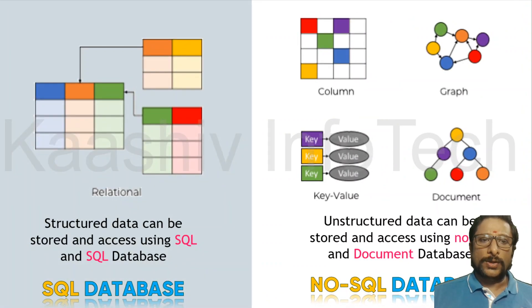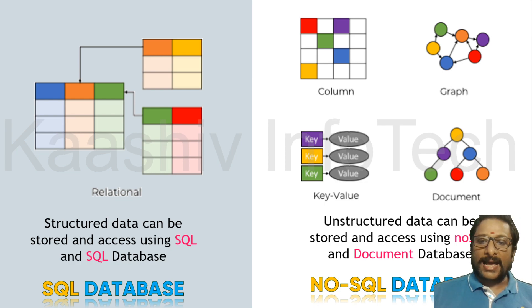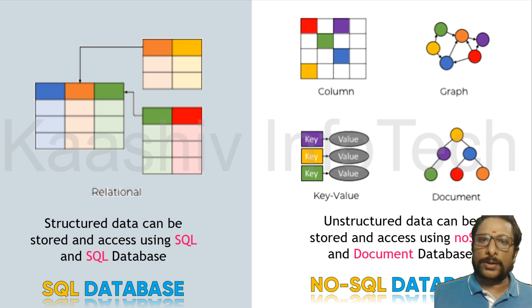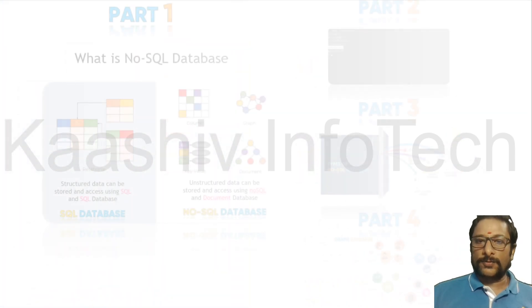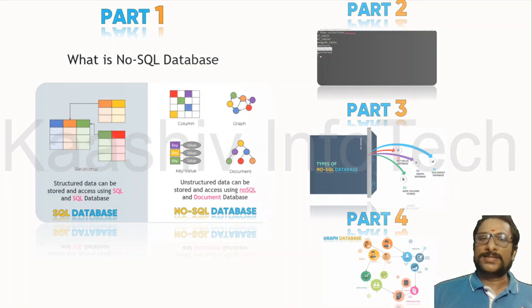SQL databases have tables and are relational — that is why it is called a Relational Database Management System, and we use SQL to process and access data. On the other end, NoSQL handles unstructured data: graphical data, hierarchical data, key-value pair data, column-based data. This is called unstructured data, and we need a more intelligent system to process it. That is why NoSQL comes into the picture.